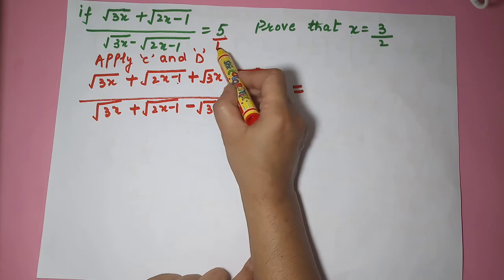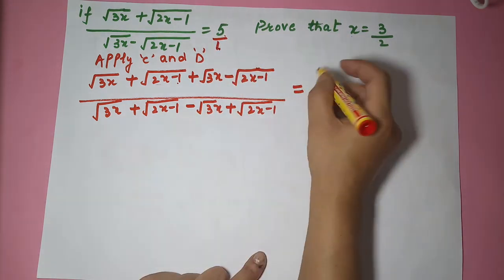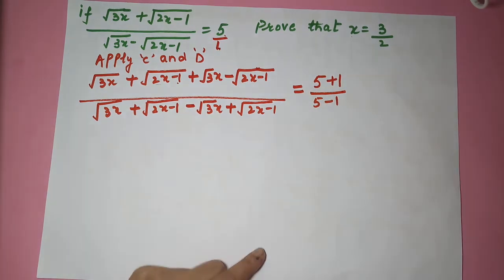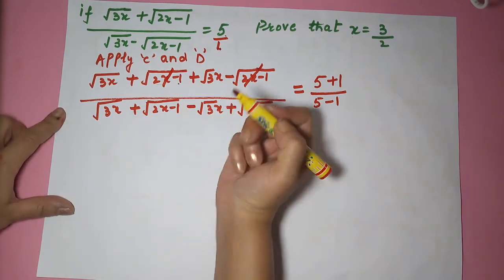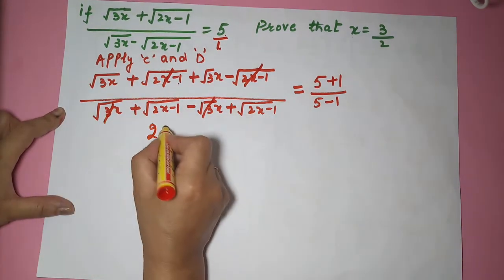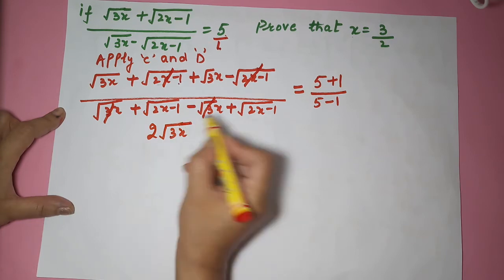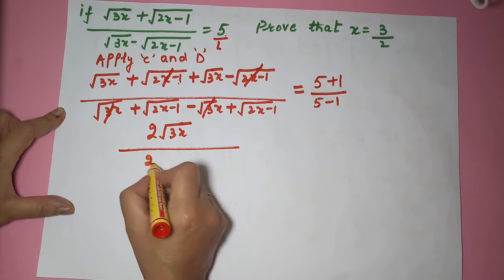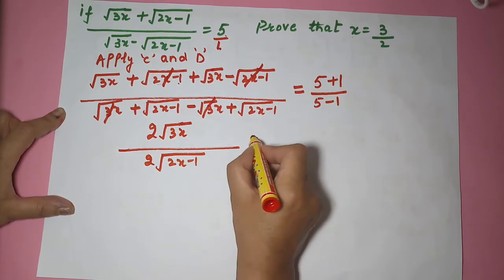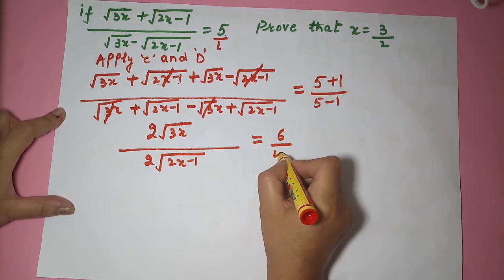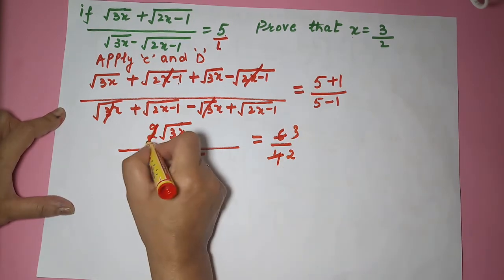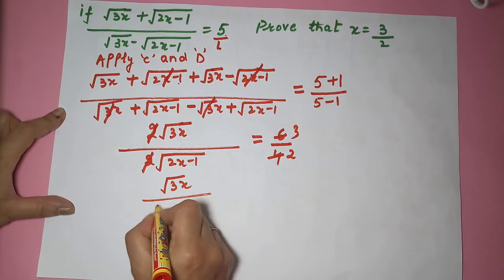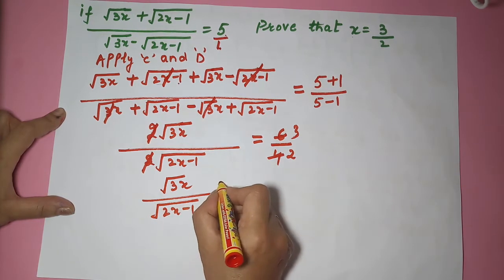In fact, there is a denominator which is 1. When nothing is given in the denominator, you have to take it as 1. So numerator plus denominator upon numerator minus denominator — this and this cancel, leaving 2 under root 3x divided by 2 under root of 2x minus 1, equal to 5 plus 1 is 6, and 5 minus 1 is 4, giving 3 by 2.